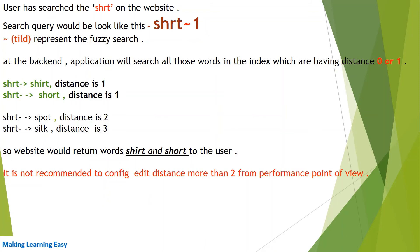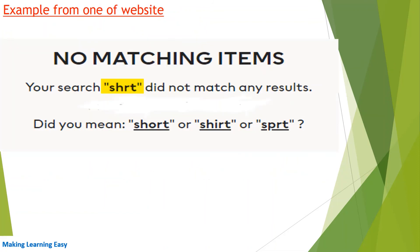As per our query, we need to fetch all words with distance 0 or 1, so the website would show 'shirt' and 'short' to the user. For the 'Did you mean' or auto-suggestion feature, it is not recommended to configure edit distance more than 2 from a performance point of view, so we need to carefully use this distance configuration. In the attached screenshot, you can see the user searched 'shrt' and the website returned no results but showed: 'Did you mean: short, cert, or sert?' — this is a real-world use case of the Levenshtein distance algorithm.